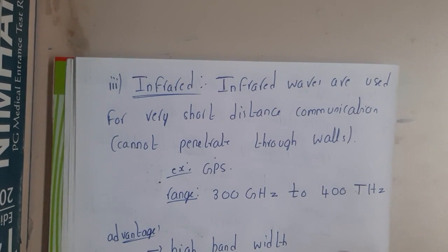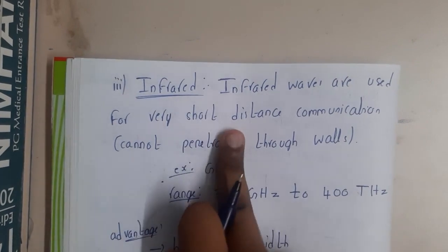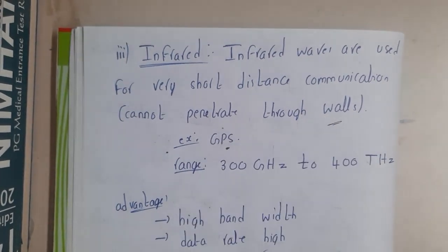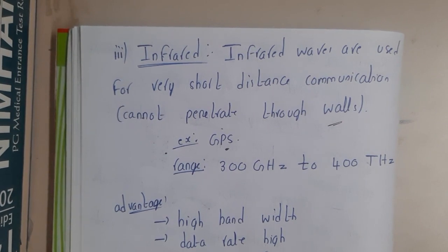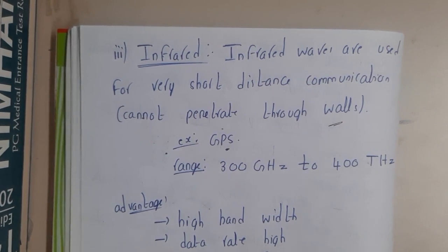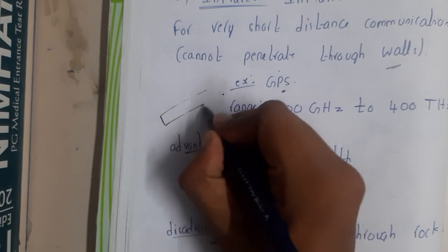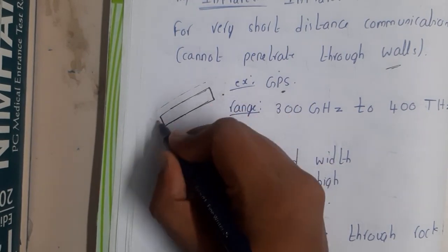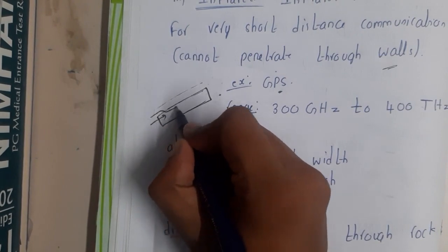Moving on to infrared — infrared waves are used for really short distances and cannot pass through walls. A commonly cited example is GPS. You may have noticed that GPS doesn't work perfectly inside your home. As an example, assume you are traveling and there is a bridge — your vehicle can either go on top of the bridge or travel below it.